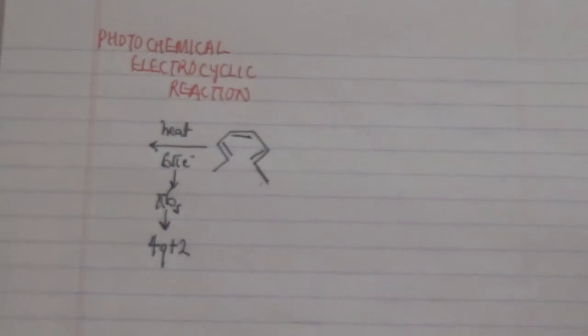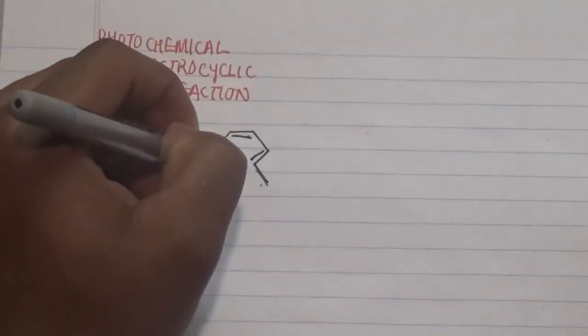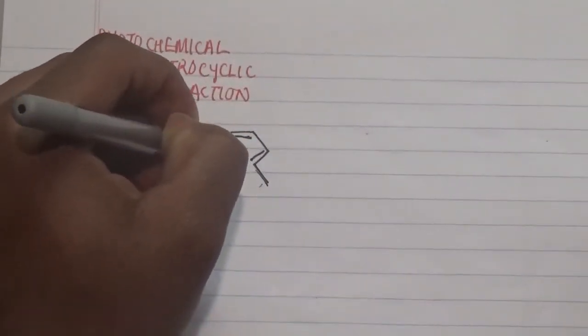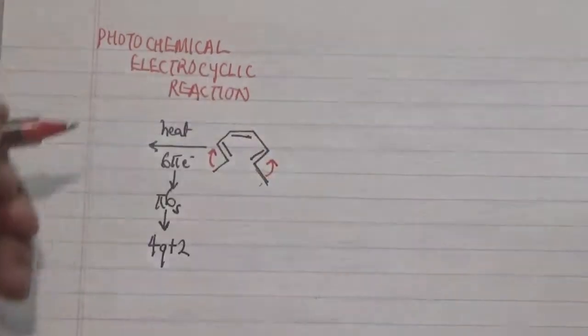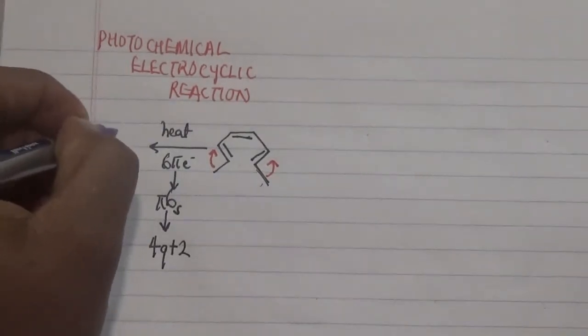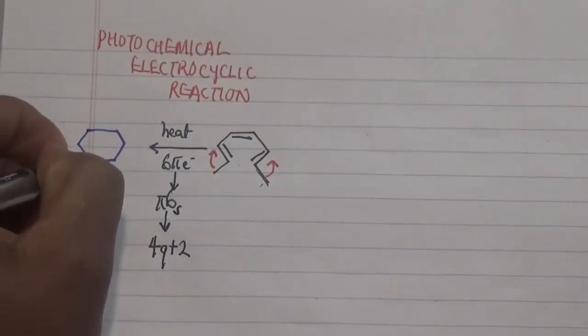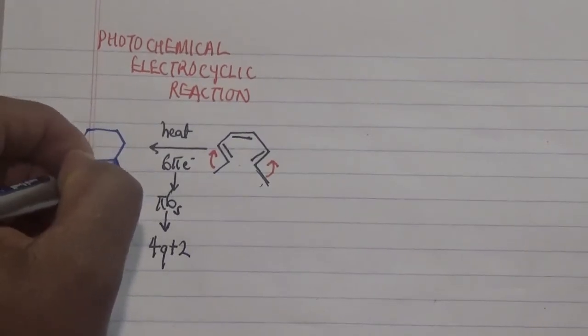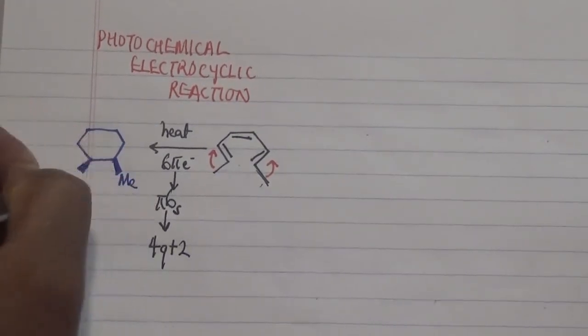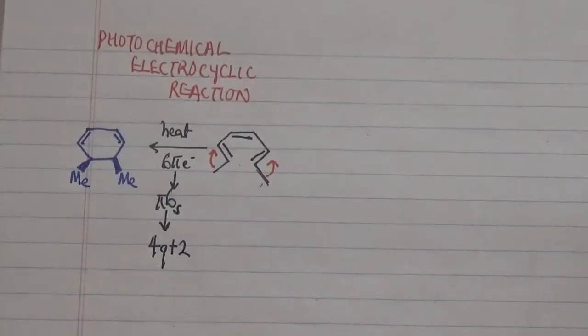Now if we go about this, a disrotatory process will make our bonds in here to actually turn this way and that way for us to be able to generate our product, which is actually having our terminal methyl groups to be in a cis position. So we have two cis groups over here where they are actually positioning here and there, and in this particular case we have that being formed.